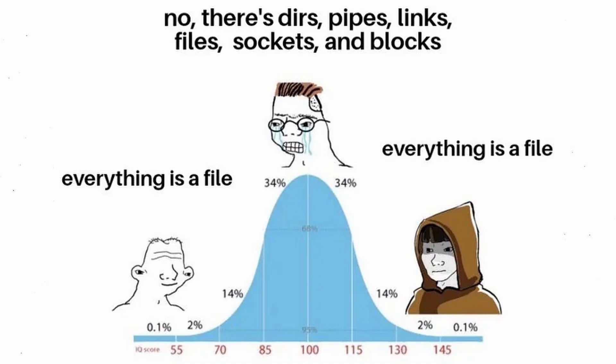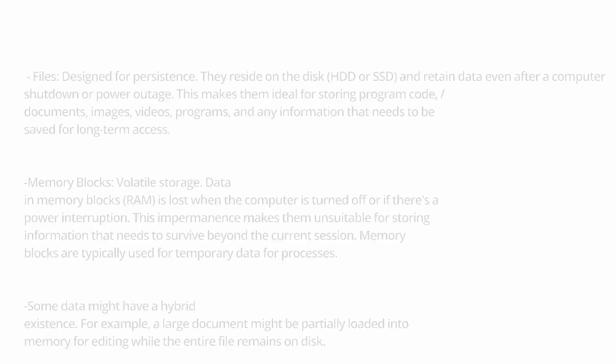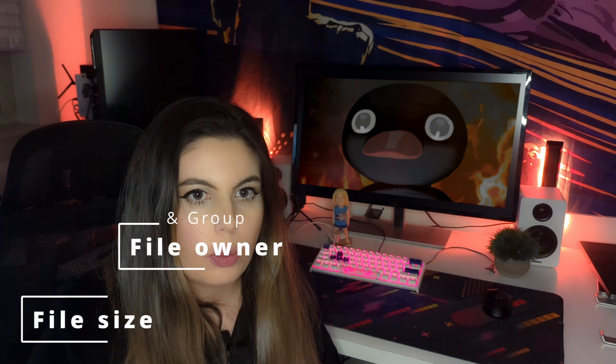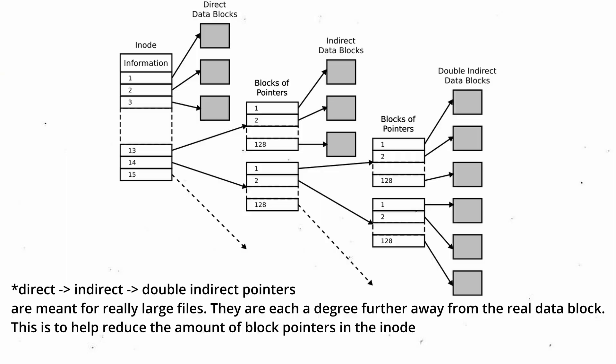Everything is a file in Linux, but let's clarify the difference between a memory block and a file. Memory blocks are typically referred to as volatile memory in RAM, whereas files are permanently stored on disk. Sometimes data has a hybrid experience where some of it is loaded in RAM while the rest of a large file is loaded in bits and pieces. Every file has an inode, which serves as an index or unique identifier. Inodes store essential metadata about the file — including file size, owner and group, permissions, time information, and block pointers that point to the actual data.